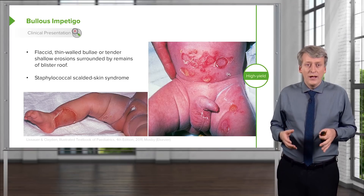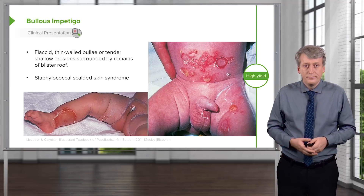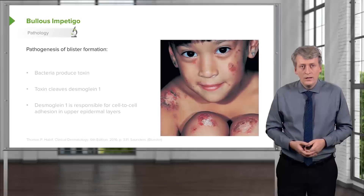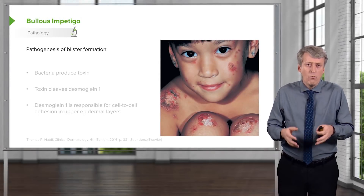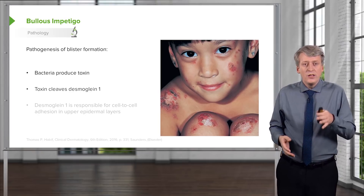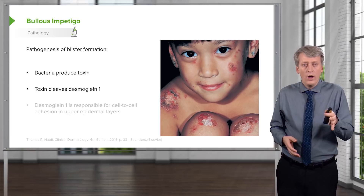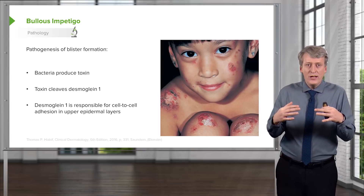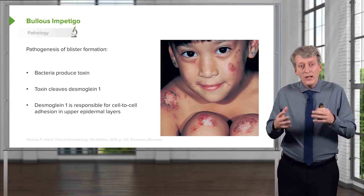Bullous impetigo is commonly implicated in staph-scalded skin syndrome. Patients with impetigo have bacteria in their epidermis that evoke an innate humoral response, causing epidermal injury and local serous exudate forming a scale or crust. They will have accumulation of neutrophils beneath the stratum corneum. The pathogenesis of blister formation is interesting: the bacteria produce a toxin that cleaves Desmoglein 1, which is responsible for cell-to-cell adhesion. With that breakdown, blisters form in the upper epidermal layers.